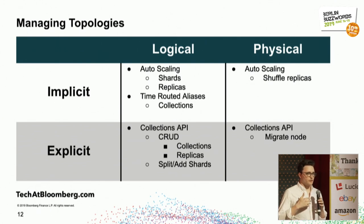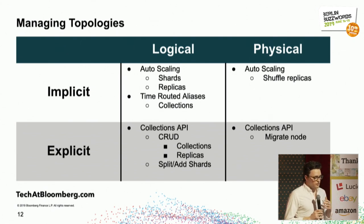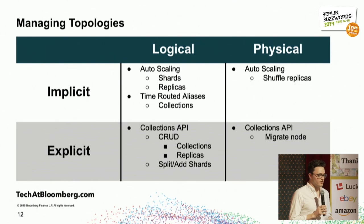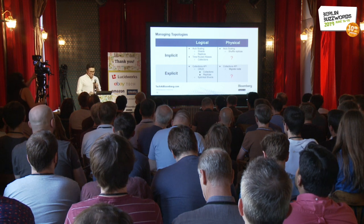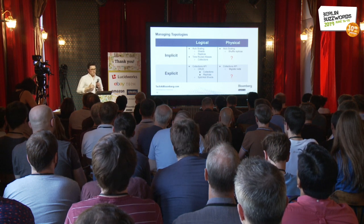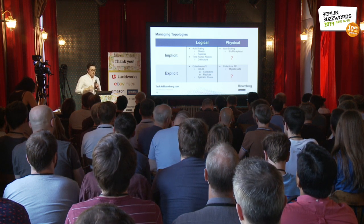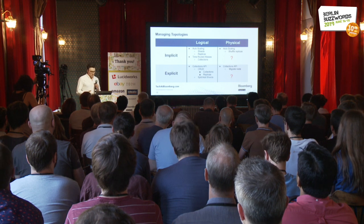The physical side of the topology deals with servers, Solr nodes, and Solr processes. It has a far sparser API set. You can do a little autoscaling — shuffling replicas or cores across Solr nodes — as well as a couple of explicit commands to the Collections API such as removing a node or migrating all cores from one Solr node to another. But in general there's not much there. When you're running thousands or even hundreds of Solr clouds, doing this physical management can take a lot of time and energy.